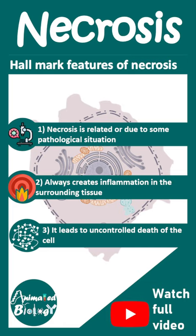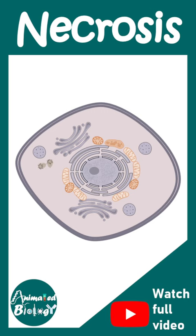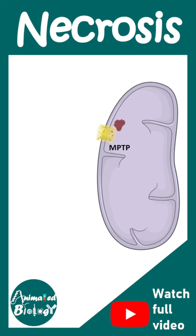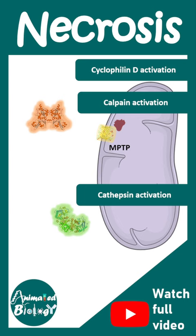One hallmark is swelling of mitochondria. Swollen mitochondria are associated with the perinuclear region, and there are several proteins which get activated in this process, known as cyclophilin D, cathepsins, and calpains. All of these are detrimental for cellular function.